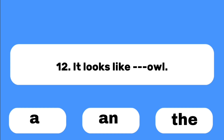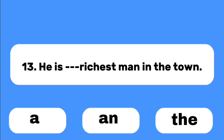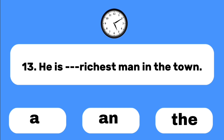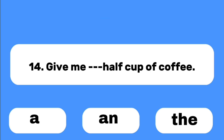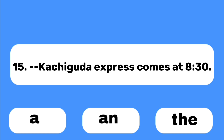Number twelve: It looks like ___ owl. Number thirteen: He is the richest man in the town. Number fourteen: Give me ___ half cup of coffee. Number fifteen: ___ Kachiguda Express comes at 8:30.